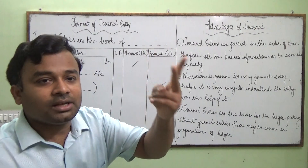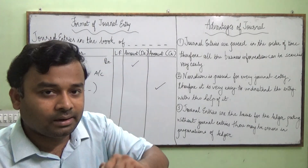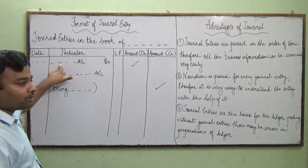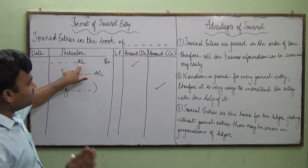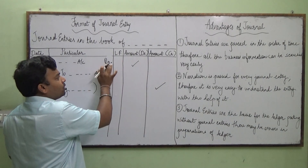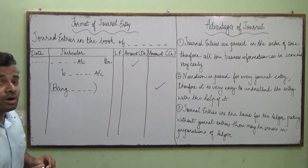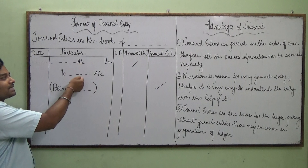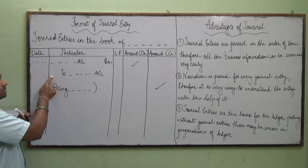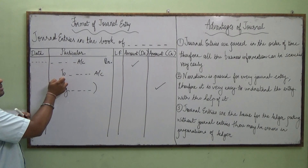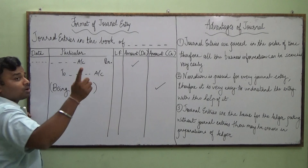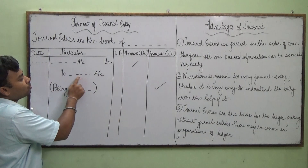As per the double entry system, every transaction has two aspects — one is debit and the other is credit. So in the transaction, you first write the account that is debited, for example Furniture Account, followed by 'Dr.' Then on the next line, you write 'To' followed by the credit account. The word 'To' — T capital, O small — indicates the account that is credited.